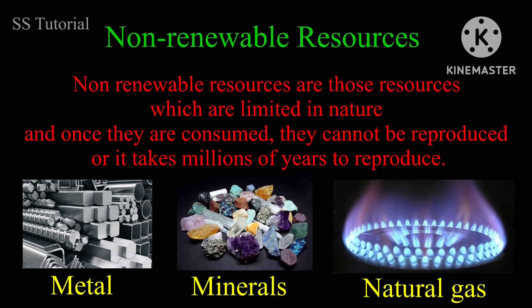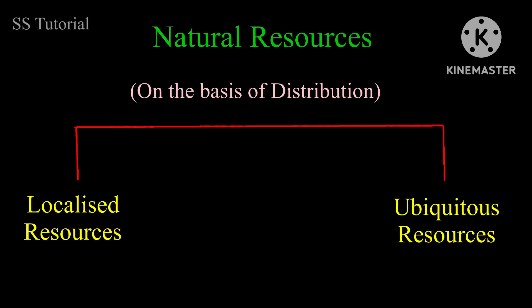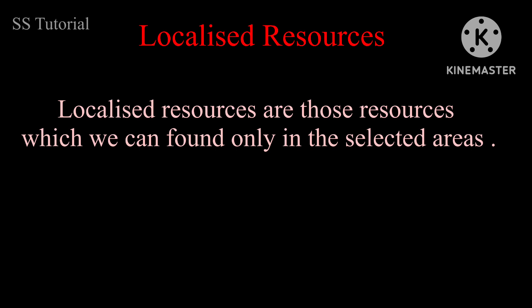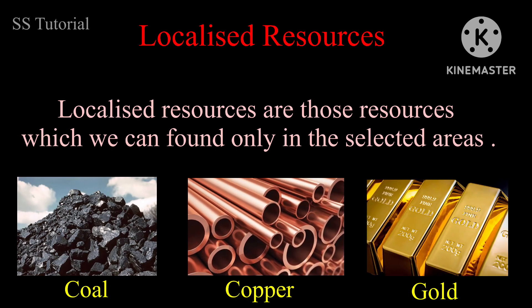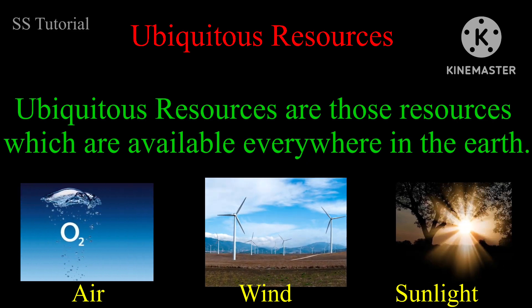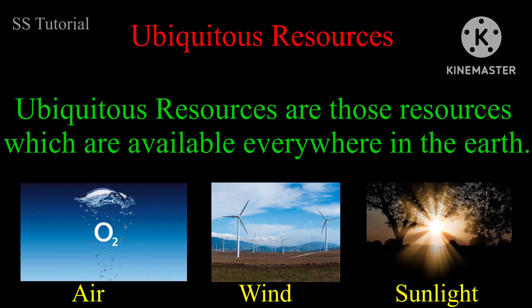Minerals and natural gas are examples of non-renewable resources. On the basis of distribution, resources can be classified into two types: localized resources and ubiquitous resources. Localized resources are those found only in selected areas, like coal, copper, and gold. Ubiquitous resources are those available everywhere on Earth, like air, wind, and sunlight.